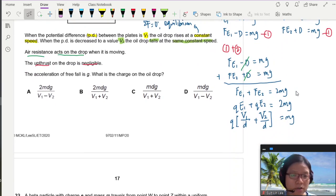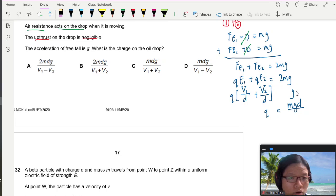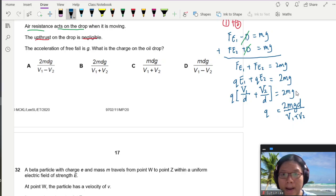All right? So now, we can rearrange, I guess. Q will be equal to, this is the common denominator, bring up to multiply mgd, or m times D times G. Where's my 2? Went for a walk. This is 2 mgd. So this is 2 mgd over V1 plus V2. So in this case, the answer is B.